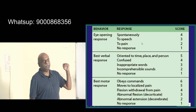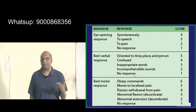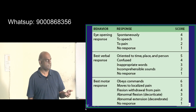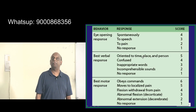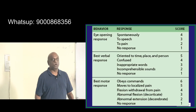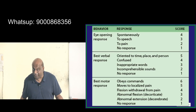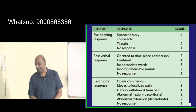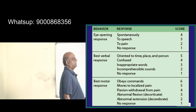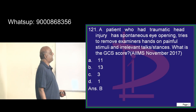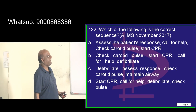Eye opening is assessed based on whether it is spontaneous, to speech — if you call 'Ramaya' and Ramaya opens the eyes — to pain, if you pinch Ramaya and eyes open, or no response even if you pinch or call. That is how you elicit the GCS. Considering this, a score of 13 is what you need to appreciate.